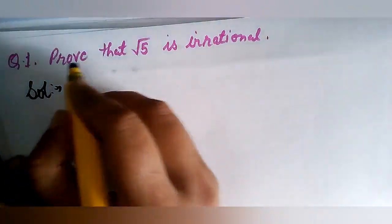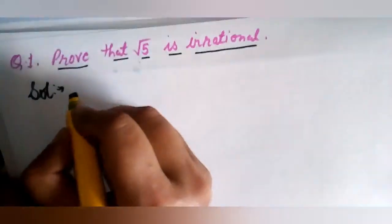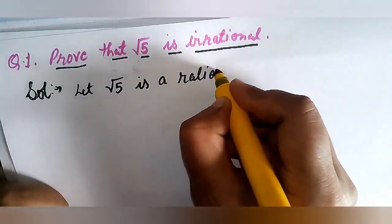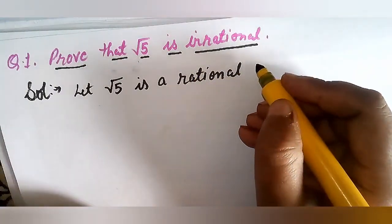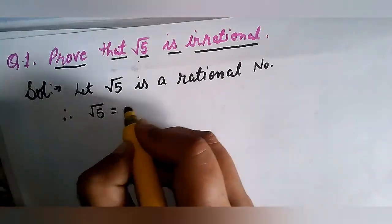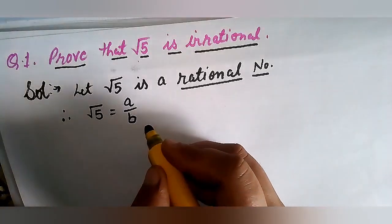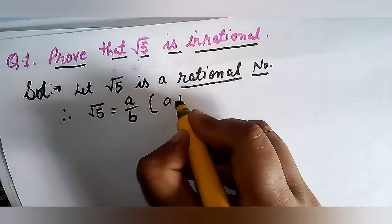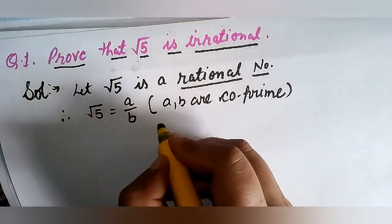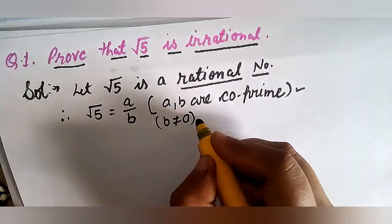It is question number 1 of exercise 1.3: prove that √5 is irrational. To prove it, we have some standard steps. Let us assume √5 is a rational number. We know that rational numbers can be written in the form of p/q where q is not equal to 0. So let √5 = a/b, where a and b are coprime and b ≠ 0.